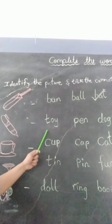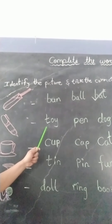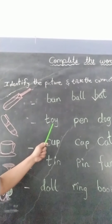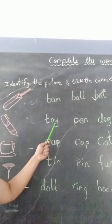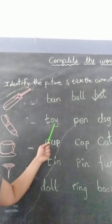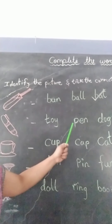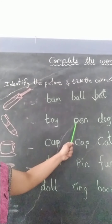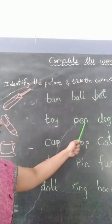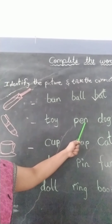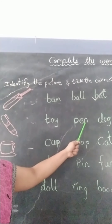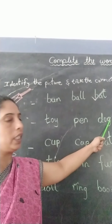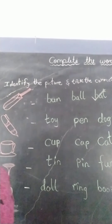Next picture is the picture of a pen. So let us see the words. First word is T-O-Y, toy. Second word is P-E-N, pen. Next word is D-O-G, dog.